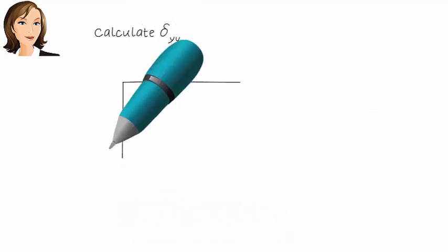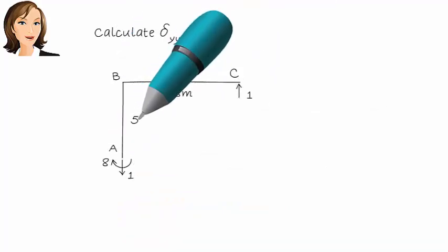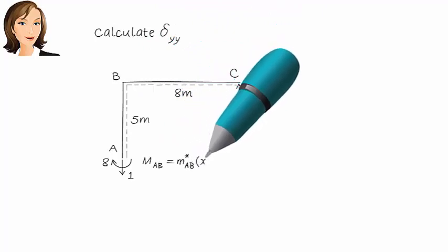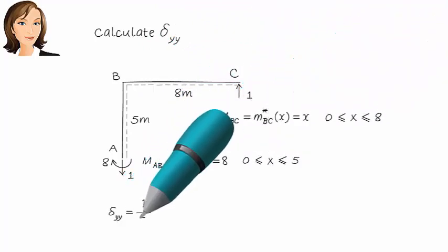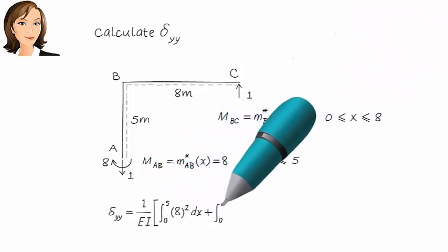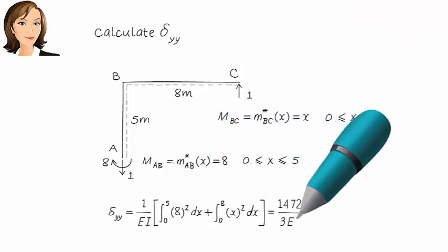Delta yy is calculated in the same manner. This is vertical displacement at C due to a vertical unit load placed at C.